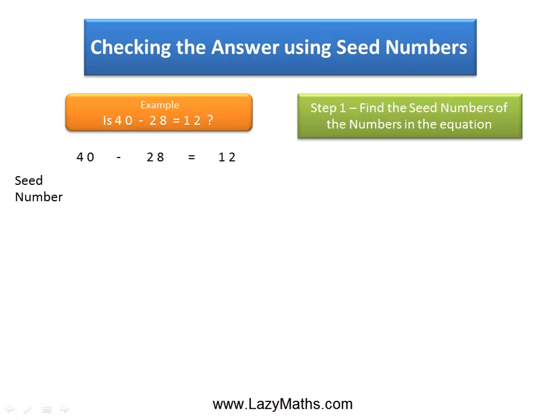The first step is to get the seed number of the numbers on the left side of the equation. So the seed number for 40 is 4 and the seed number for 28 is 1.